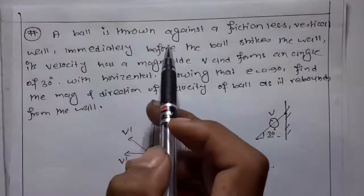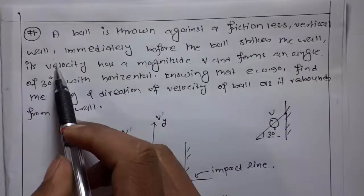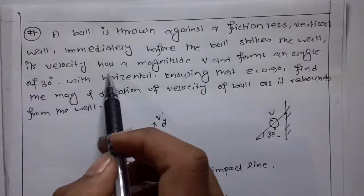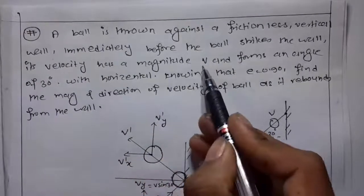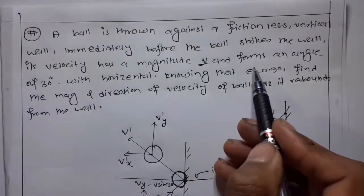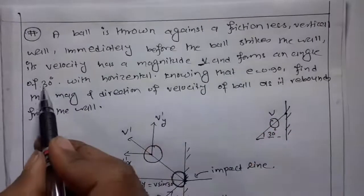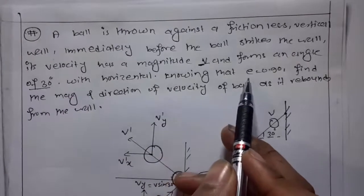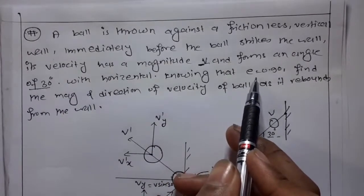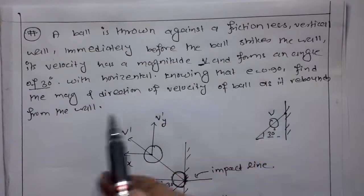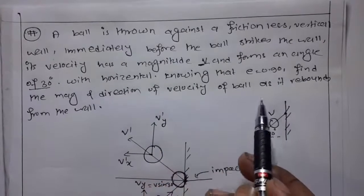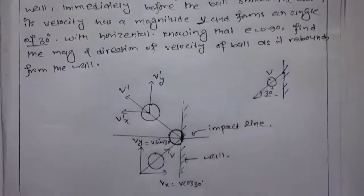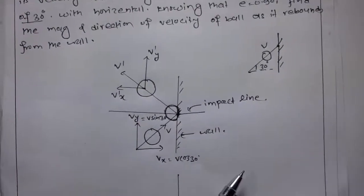A ball is thrown against a frictionless vertical wall. Immediately before the ball strikes the wall, its velocity has a magnitude v and forms an angle of 30 degrees with the horizontal. Knowing that the coefficient of restitution e is 0.9, find the magnitude and direction of velocity of the ball as it rebounds from the wall.